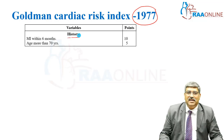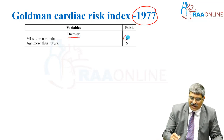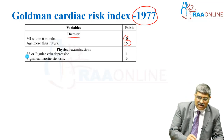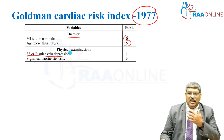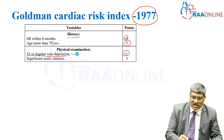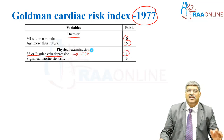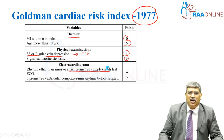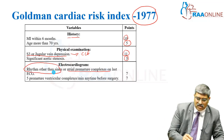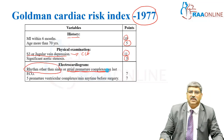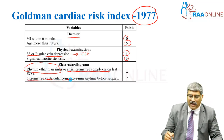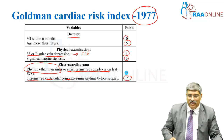Coming to the history: recent MI within 6 months is given 10 points, and an elderly patient whose age is more than 70 years is given 5 points. Coming to physical examination: S3 gallop or jugular vein elevation is given 11 points, indicating a failure component. Significant aortic stenosis is given 3 points. On electrocardiogram, any rhythm other than sinus or atrial premature complex is given 7 points, or 5 premature ventricular complexes per minute anytime before surgery is also given 7 points.